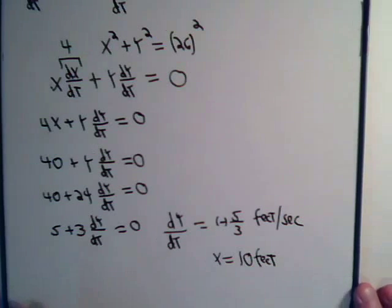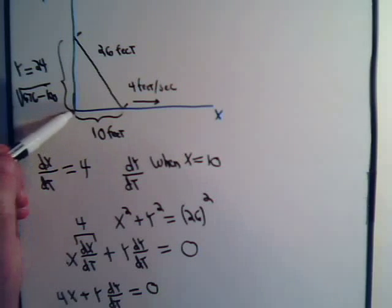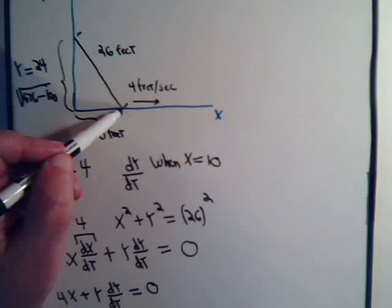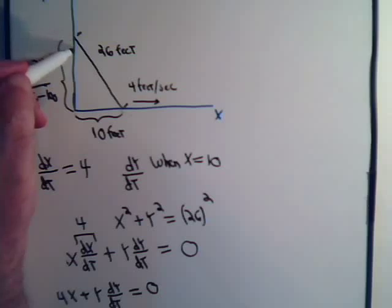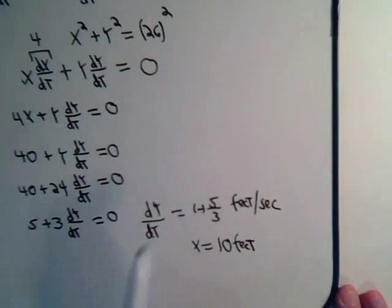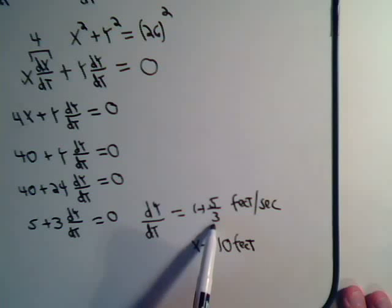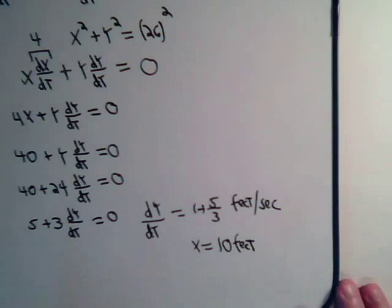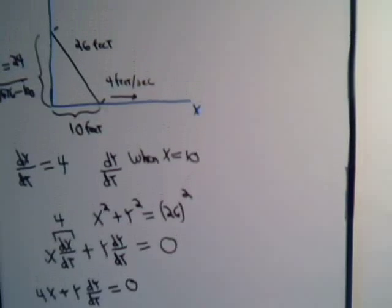So we're pulling the ladder away from the wall, and when the base is 10 feet away from it, at that precise moment in time, the top part of the ladder is falling downward at a rate of minus 5 thirds feet per second. So that's it.